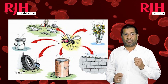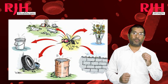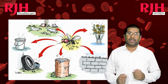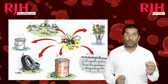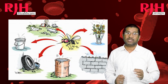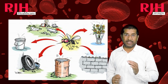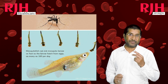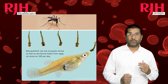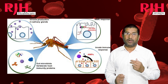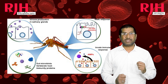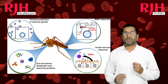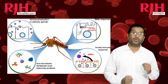Preventing Dengue primarily involves controlling the mosquito population and avoiding mosquito bites. Eliminate mosquito breeding sites by removing stagnant water sources such as flower pots, old tires, and containers. You can also clear larvae by introducing fish like gambusia. Use mosquito repellents containing DEET on exposed skin. Wear protective clothing such as long sleeves and pants, particularly during peak mosquito activity. Install window and door screens to keep mosquitoes out of your living spaces.